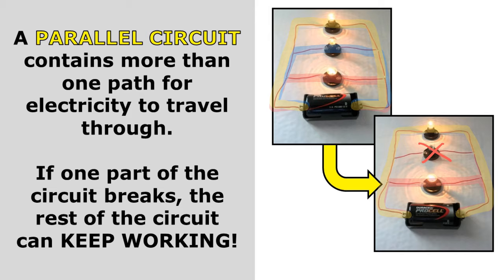Earlier in the series circuit, when there was a gap, that stopped all the electricity from getting from one side of the battery to the other. But in a parallel circuit, there's more than one path. So electricity can still get from one side of the battery through part of the circuit and back to the other side of the battery without having to go through the gap. And that's why the rest of the circuit keeps working.